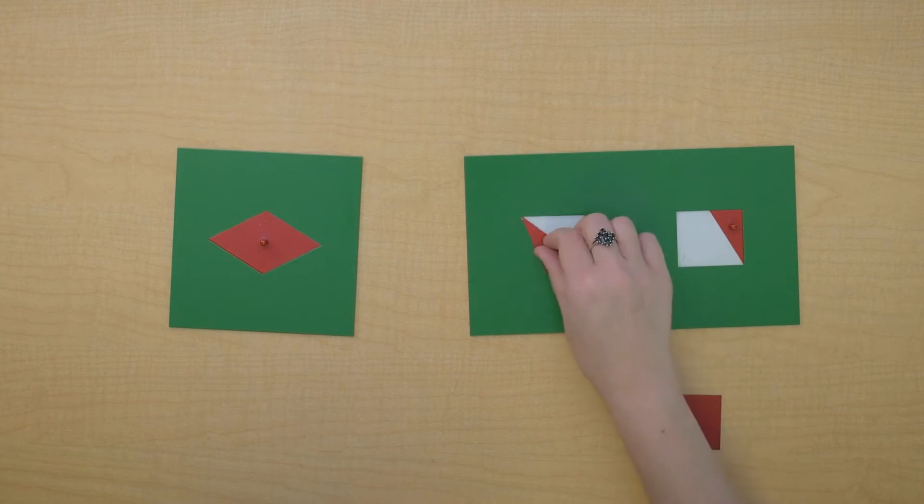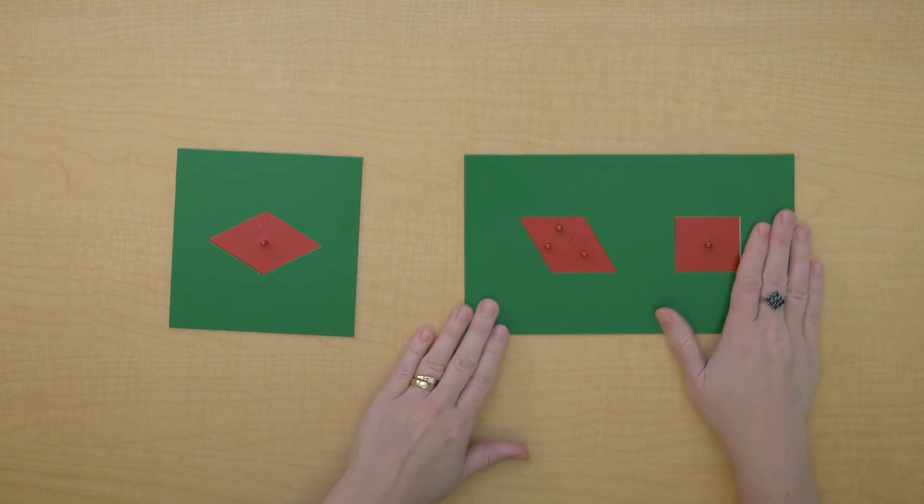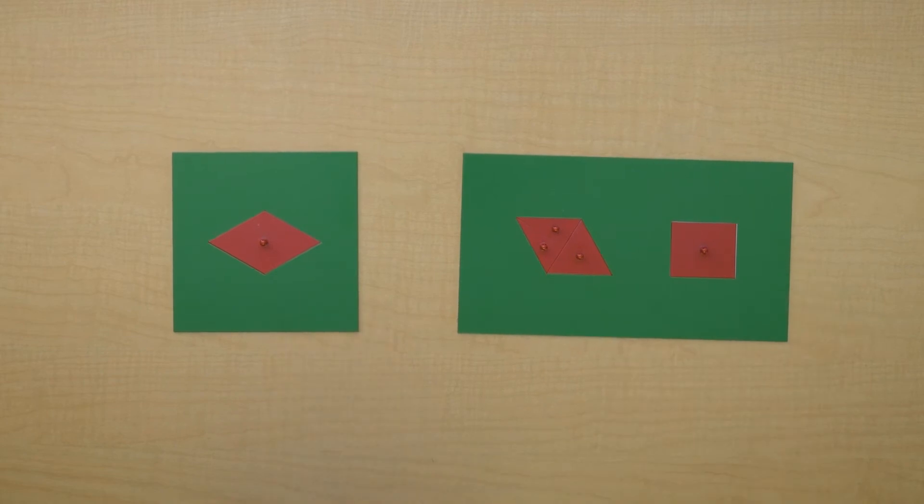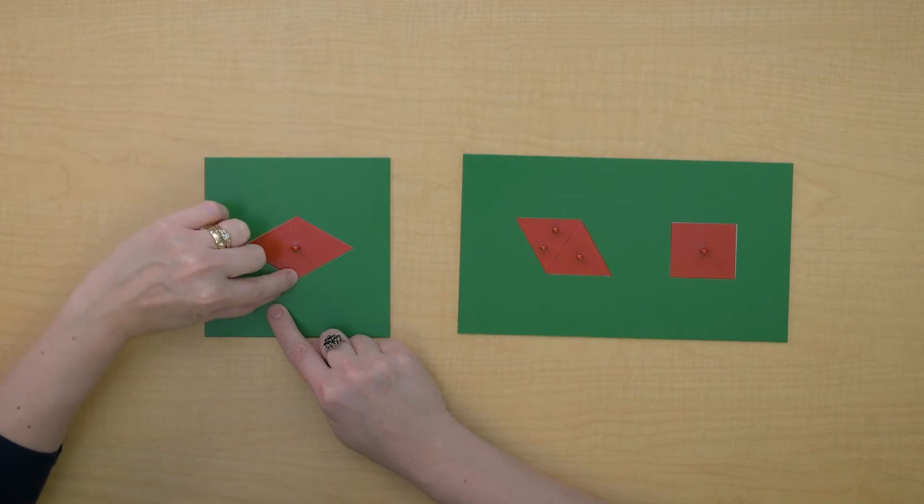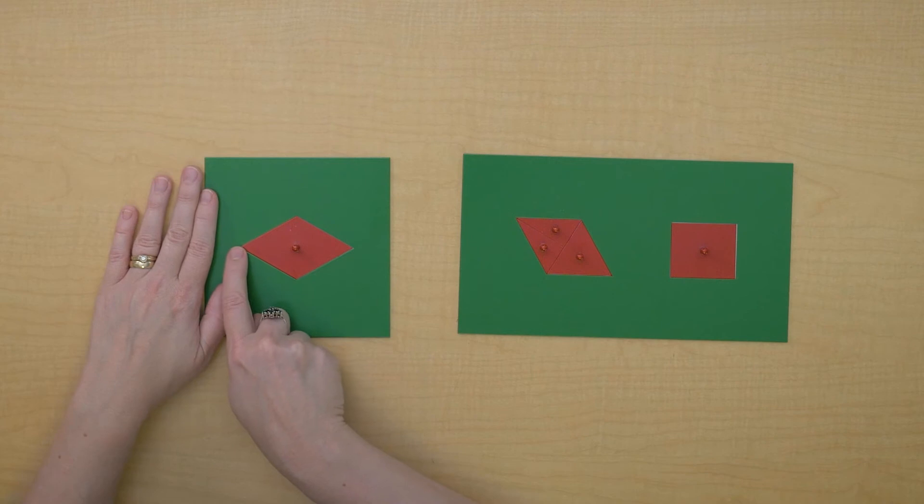So we're going to identify some other parts of the rhombus to help us with this formula. So let's take a look here. We've got our rhombus. We call this line that extends here the minor diagonal. And remember, we have another diagonal here that's called the major diagonal.